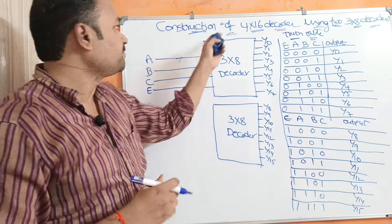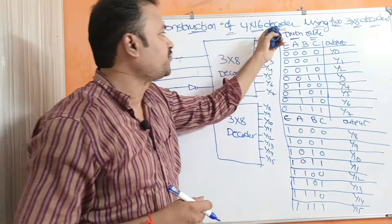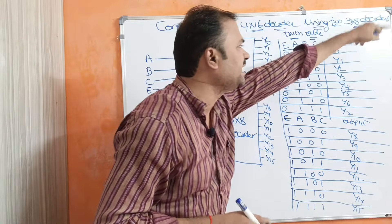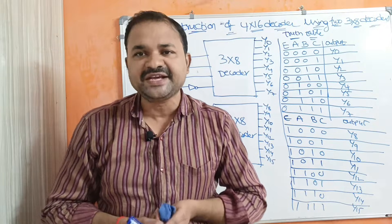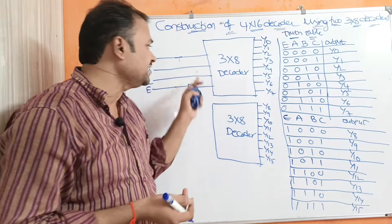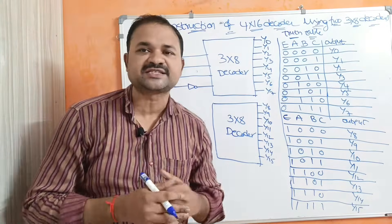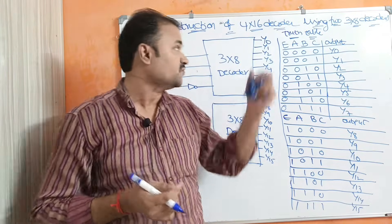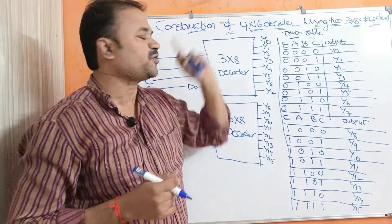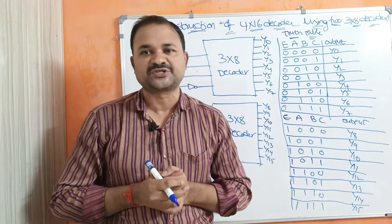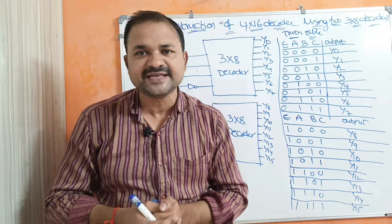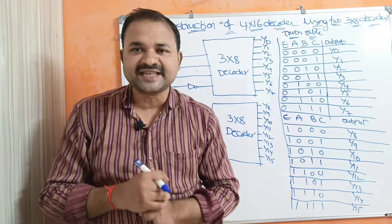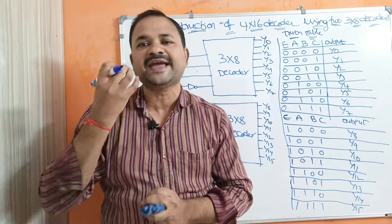Let us discuss the construction of a 4 by 16 decoder using two 3 by 8 decoders. We know that a 3 by 8 decoder accepts 3 inputs and produces 8 outputs, whereas a 4 by 16 decoder accepts 4 inputs and produces 16 outputs. Our aim is to implement a 4 by 16 decoder with the help of two 3 by 8 decoders.